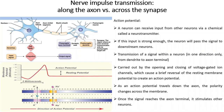First we will discuss the nerve impulse transmission process across the synapse and along the axon. As you are aware, the neuron has a cell body or soma which contains the nucleus and other intracellular organelles. It also bears outward projections known as dendrites, which are responsible for receiving a signal or input from other neurons. The cell body gives rise to the axon, which forms from a region known as the axon hillock. If the received signal is strong enough, it will pass along the length of the axon to downstream neurons.